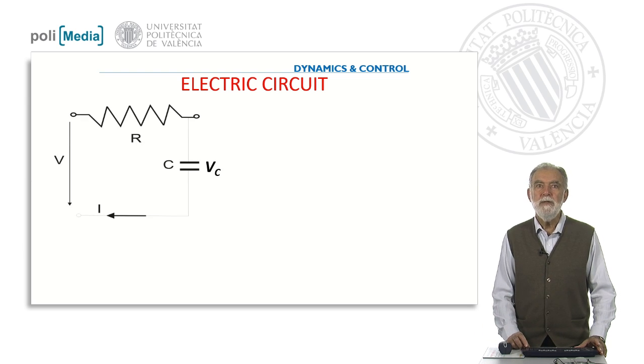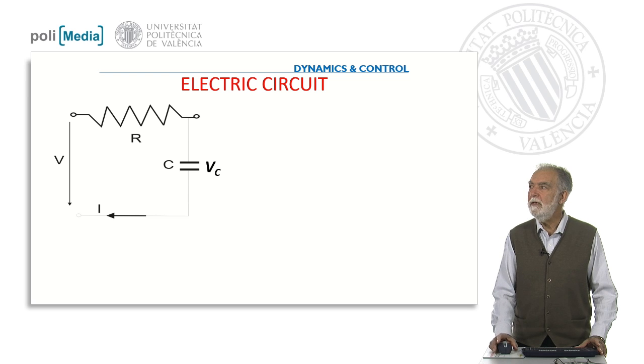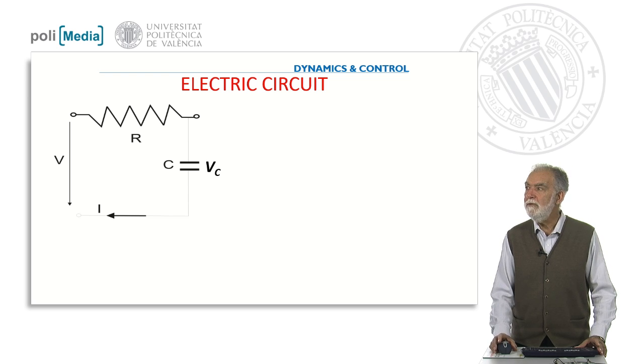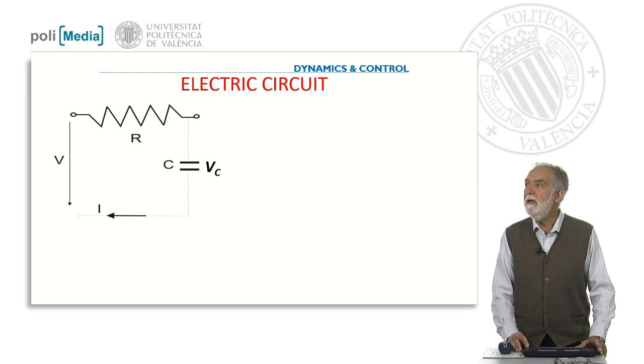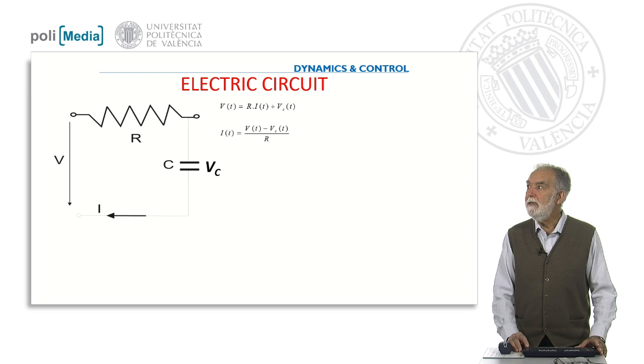Today the circuit we are going to deal with is composed by a resistor and a capacitor. Again we can use the electric circuits laws. Here is the first balance of differential of potential between the different points in the circuit, and the second one is the Ohm's law relating the voltage and the current in the resistor.